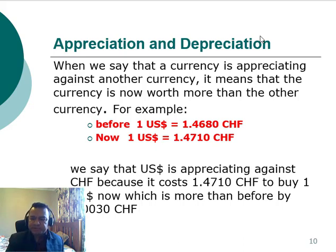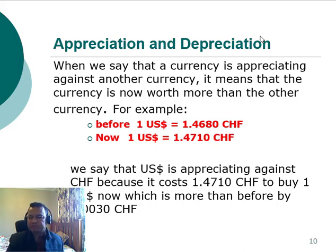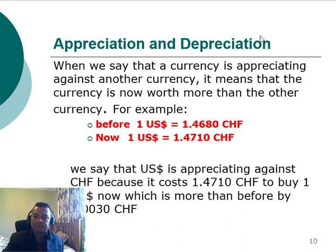So the Australian dollar depreciated against the US currency. This appreciation or depreciation is always happening. For example, if before one US dollar was purchasing 1.4680 Swiss Franc and now one US dollar is purchasing 1.4710 Swiss Franc, it means the US dollar appreciated against that currency — now worth 0.003 Swiss Franc more.